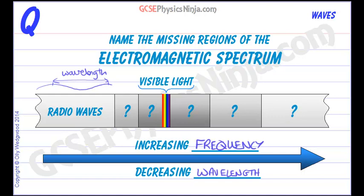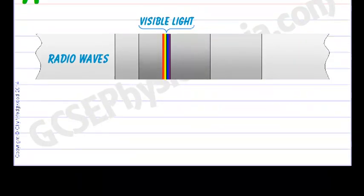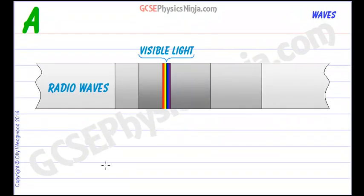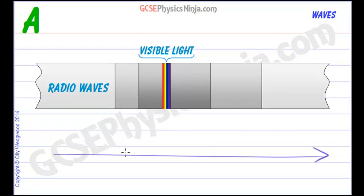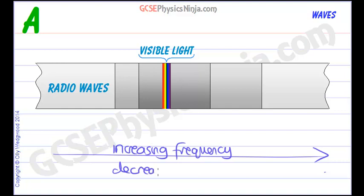Let's take a look at the other types. Just remember: going this way is increasing frequency, and going the other way would be decreasing wavelength, getting smaller and smaller.